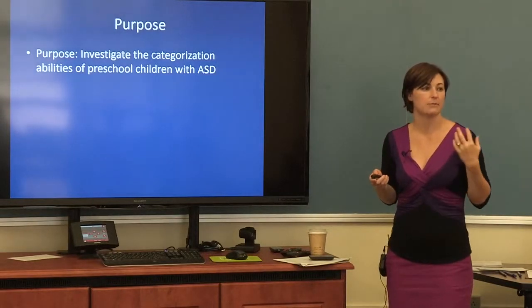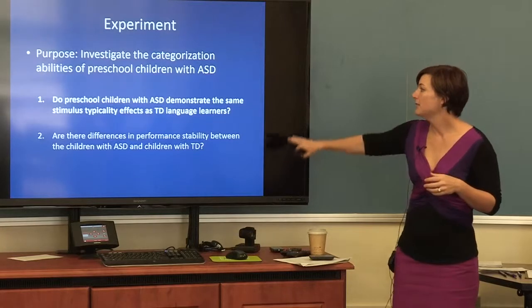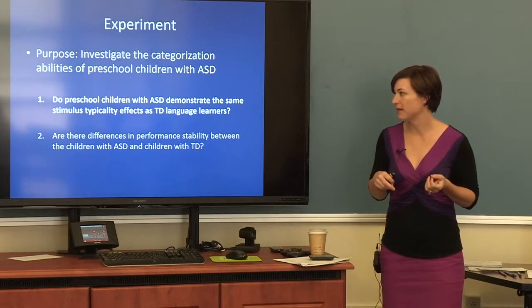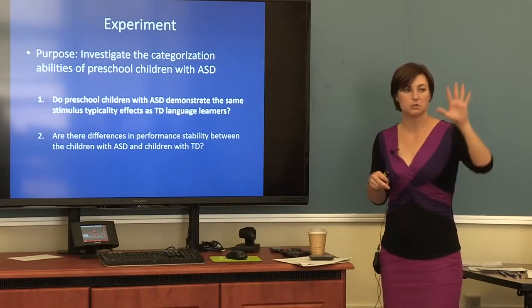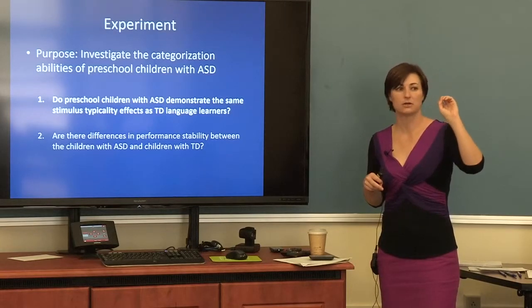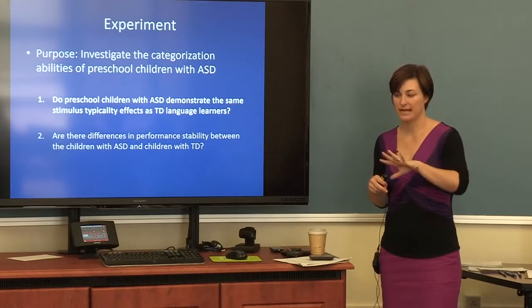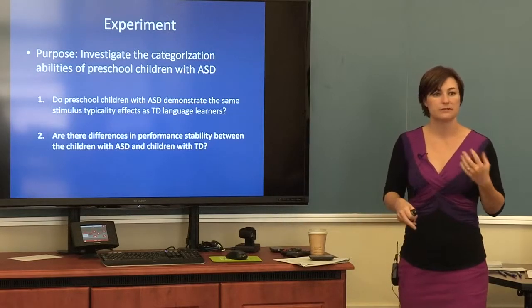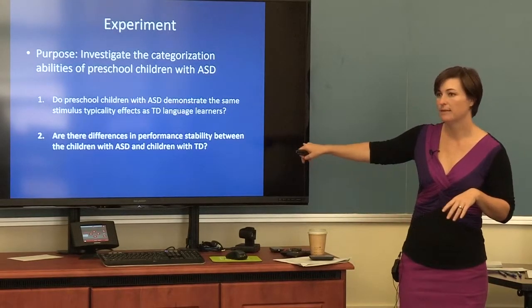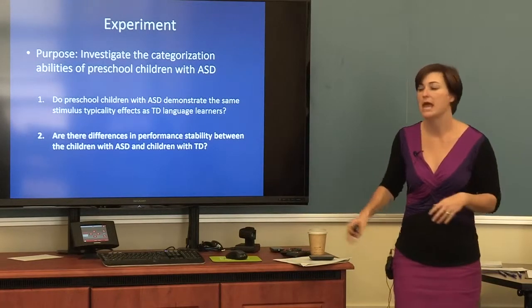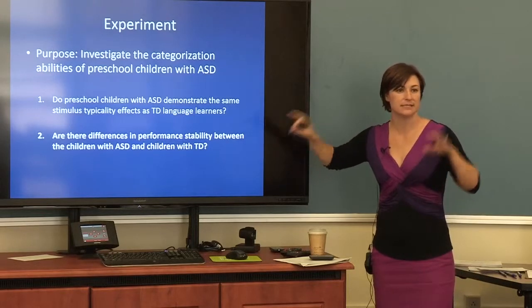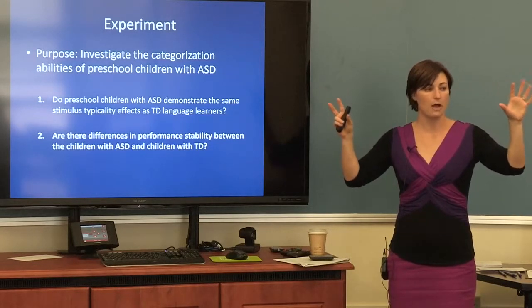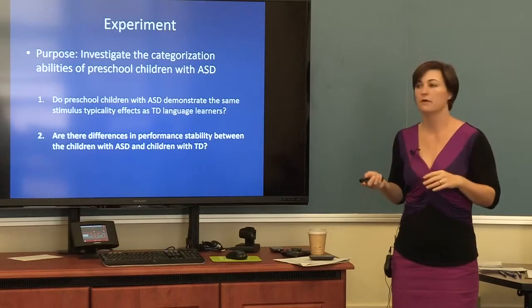When we look up to school-age adolescents and adults, this same pattern emerges — kids with high-functioning autism look really similar to language-matched peers. What we wanted to do in this study was take this task and extend it down to a younger group: preschoolers with autism. We wanted to see whether preschoolers with autism demonstrate the same stimulus typicality effects as typical language learners — responding faster and more accurately to typical than atypical stimuli — and whether there are differences in performance stability between the two groups, grounded in the dynamic systems framework.